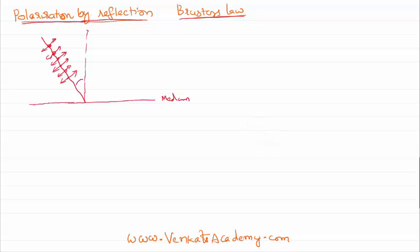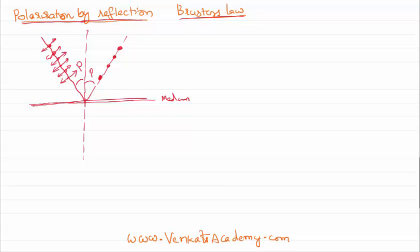This is called the angle of incidence. At a particular angle of incidence, called the angle of polarization, it is found that this boundary acts like the axis of a crystal — that is, the axis of a polarizer. The reflected light ray has only vertical vibrations. We know that the angle of incidence equals the angle of reflection, so the angle of reflection is also called the angle of polarization. At this particular angle, the boundary separating the two media acts like the axis of a polarizer, so it reflects only vertical vibrations.